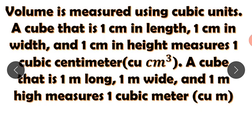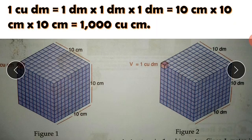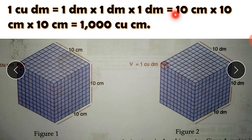A cube that is one meter long, one meter wide, and one meter high measures one cubic meter. So if the length, width, and height is one, then in cubic centimeters that is one also. Let's take a look at these figures. One cubic decimeter equals one decimeter times one decimeter times one decimeter.